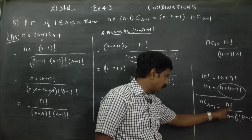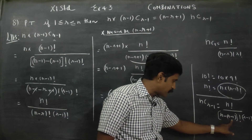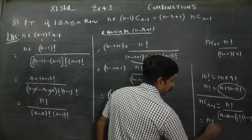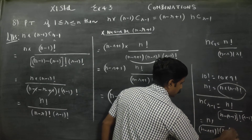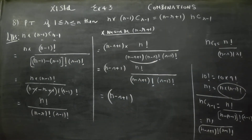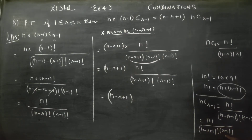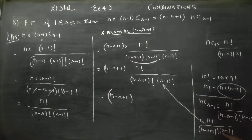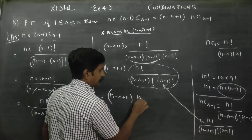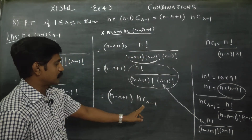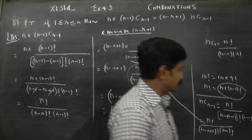nCr minus 1 equals n factorial by n minus r plus 1 factorial into r minus 1 factorial. So the expanded form of nCr minus 1 is n factorial by n minus r plus 1 into r minus 1 factorial. This is your RHS, and it matches what we derived from the LHS. Hence proved.